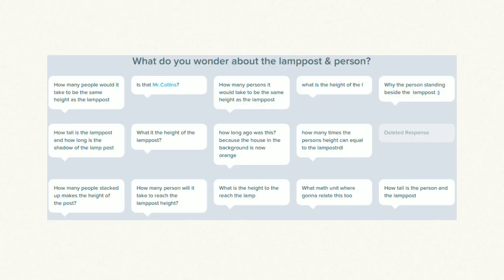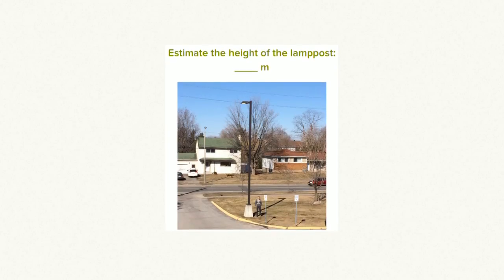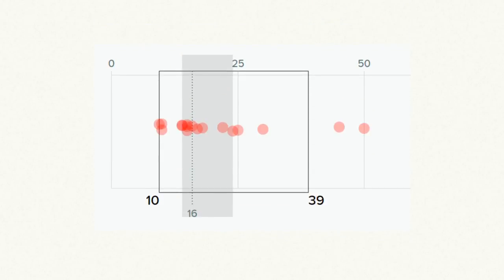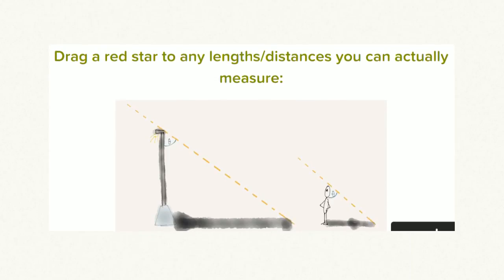Questions that my students wondered include things like, how tall is the lamppost? Or, how many people can I stack on top of each other to equal the height of the lamppost? Next, I ask my students to estimate the height of the lamppost in meters — three times: estimating too high, too low, and then their best estimate. My last class had a minimum guess of 10 meters, a maximum of 50 meters, and a class average of around 16 meters tall for the lamppost.